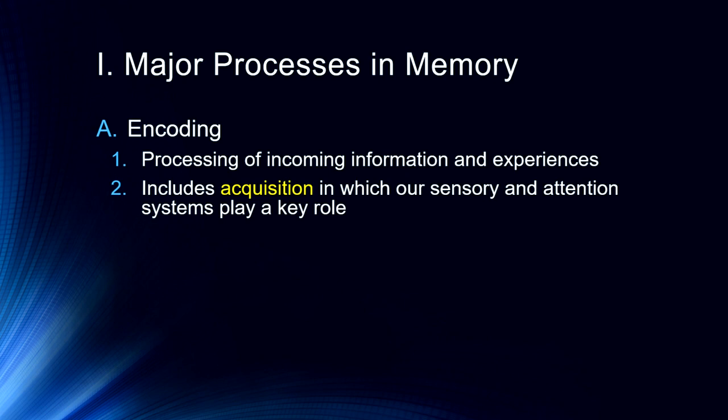One of the things we know, for example, if you're trying to study for an exam, you will acquire that information far better if you use your working memory to elaborate on it — think about the material, try to associate it with past experiences or other things that you know about. So that acquisition is an important part, and it's a process which we might have some control over as we're trying to learn or think about trying to remember something later.